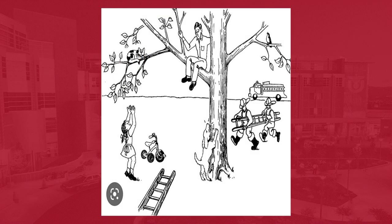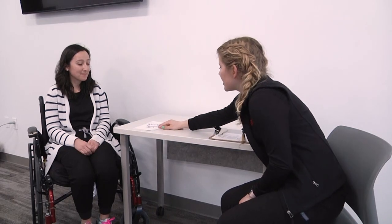We will use this picture for reference in the next examples. A person with Wernicke's aphasia may look and sound like the following. Tell me what's happening in this picture.